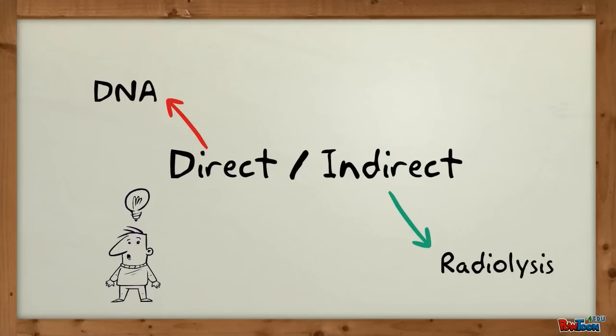If it occurs on a distant non-critical molecule, it is an indirect effect. The principal effect on humans is indirect, as in radiolysis.